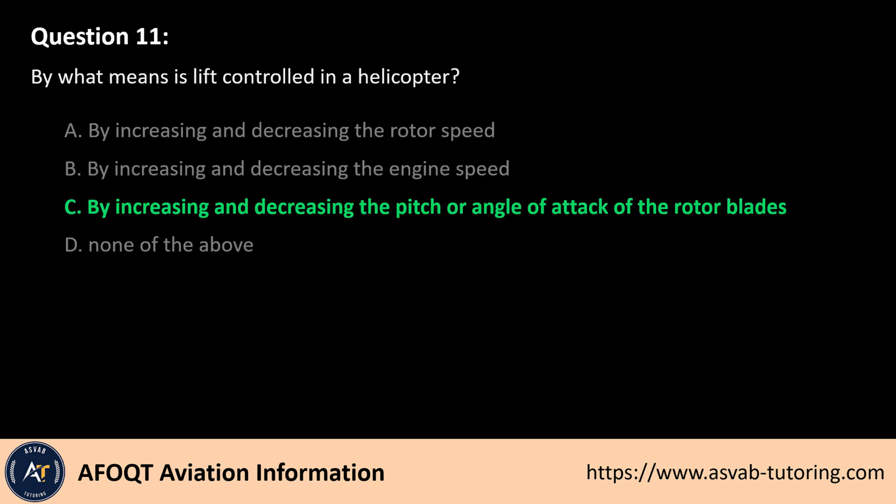The answer is C. In a helicopter, lift is controlled by increasing or decreasing the pitch, or angle of attack, of the rotor blades. This is achieved using the collective control, which changes the pitch of all blades simultaneously. A higher pitch increases lift by generating more aerodynamic force, while a lower pitch reduces lift. Rotor speed generally remains constant during normal flight.